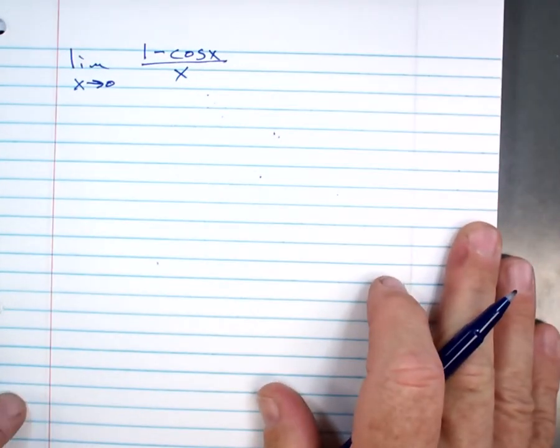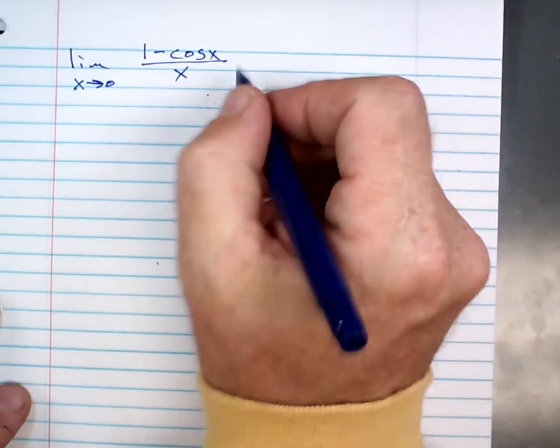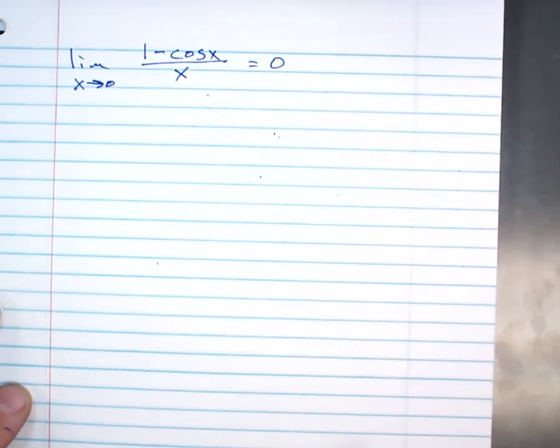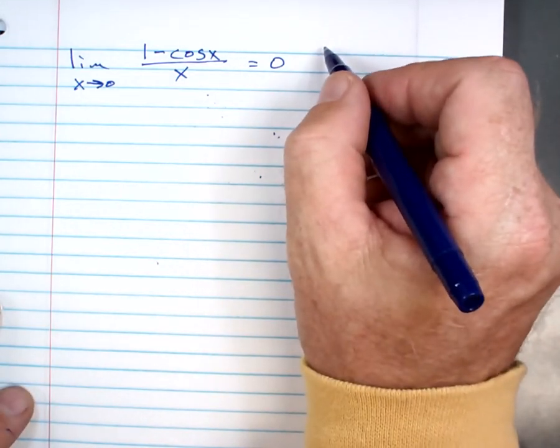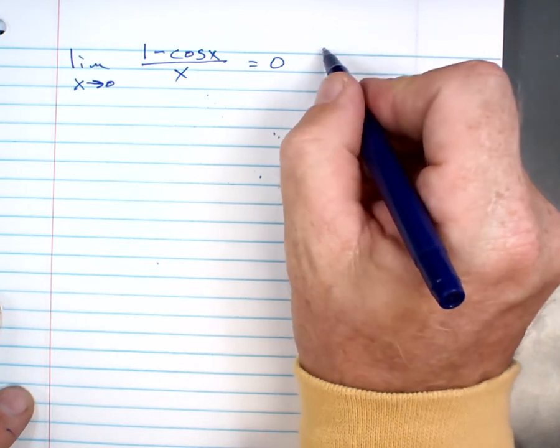Okay, so we're going to take the limit of that, and I'm going to prove to you that the limit of that is zero. Somewhere in your notes, you need to write down that Kruger's favorite trig identity is this.